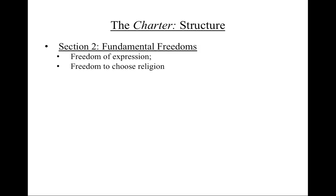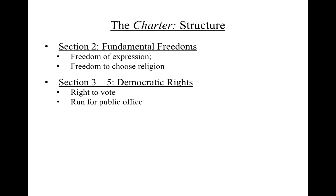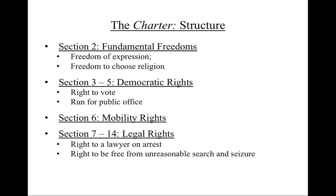Very briefly, the structure of the Charter is as follows. After Section 1, the Reasonable Limits Clause, is Section 2, which sets out basic fundamental freedoms like freedom of speech or freedom of choice of or from religion. Sections 3–5 set out basic democratic rights, like the right to vote and the right of citizens to run for election to public office. Section 6 sets out the rights of Canadians to live, move, and work throughout the country. Sections 7–14 contain general and specific legal rights, such as the right to a lawyer upon arrest or the right to be free from unreasonable search and seizure. It also contains the general right to life, liberty, and security of the person in accordance with the fundamental principles of justice in Section 7. You may encounter Section 7 again in the course of these modules, as it is frequently the basis for legal challenges to laws.